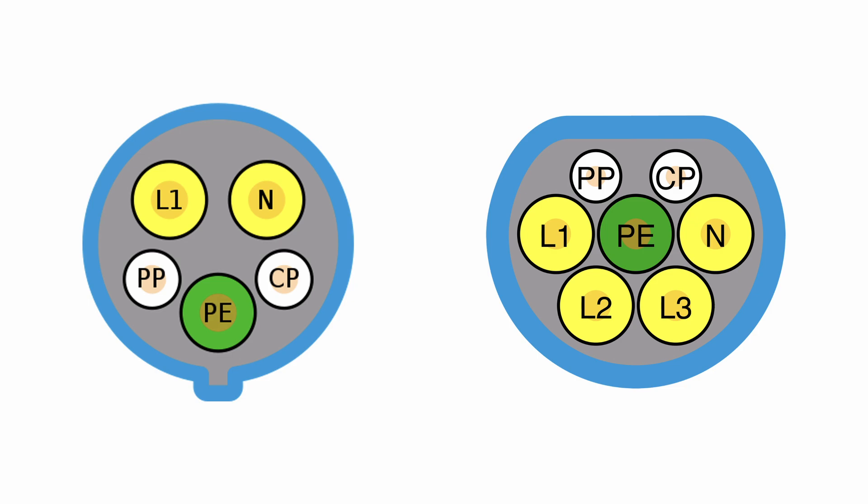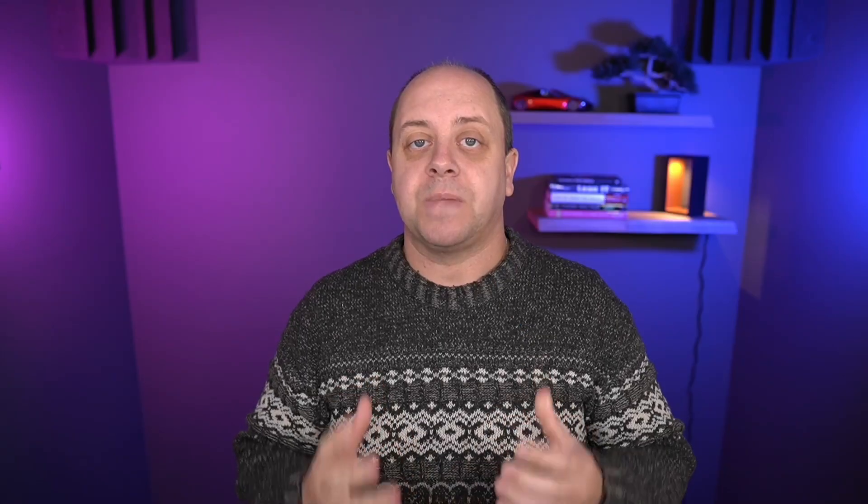the neutral and ground wire. You also have the PP (proximity pilot), which carries a signal to latch or unlatch the charge cable. The CP (control pilot) is used to control the charge and communicate with the vehicle — the state the charger is in, whether the vehicle can start charging, and how much it can charge. On the right is the three-phase Type 2 plug with L1, L2, and L3, the neutral as the fourth wire, ground, and the same PP and CP pins in both the cable and the charge port.